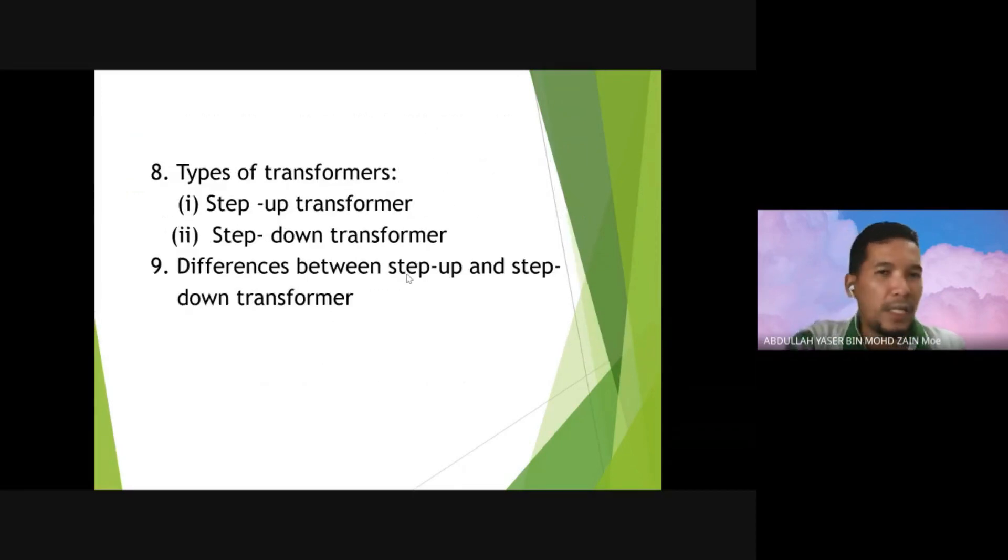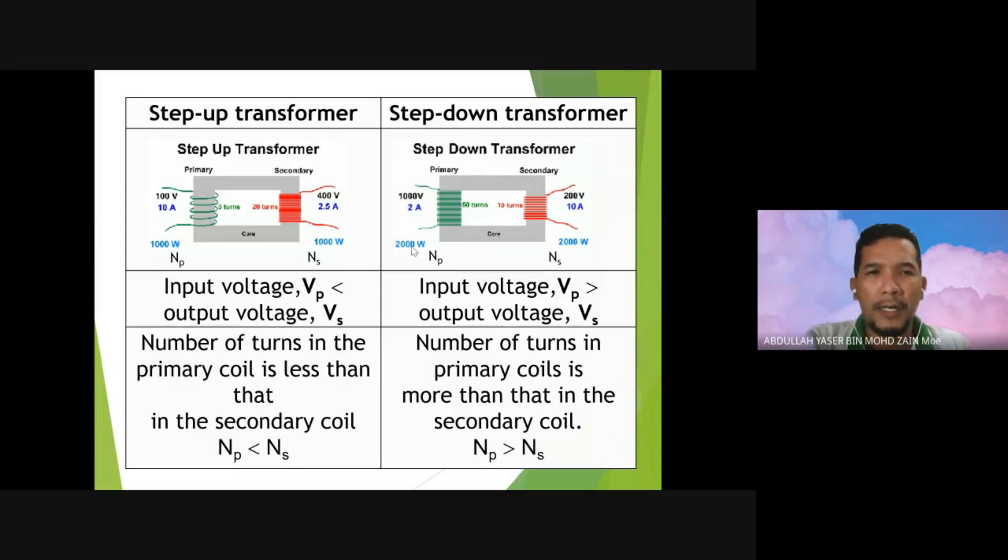Let's see the type of transformers. The first type is called step-up transformer, and the second type is called step-down transformer. The difference between step-up and step-down transformers depends on how many turns for the primary and secondary. This is a diagram showing the step-up transformer. From here you can see NP and NS. NP stands for primary and NS represents secondary. Input voltage for step-up transformer is VP.